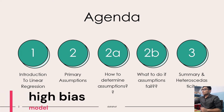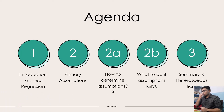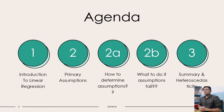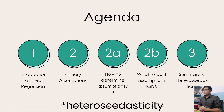Coming to the agenda of this video: we will look at the introduction to linear regression, we will talk about the primary assumptions, and as a subsection we will understand how to determine those assumptions, what to do if those assumptions fail, and we shall discuss the summary of heteroscedasticity.